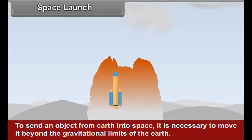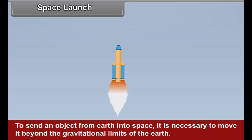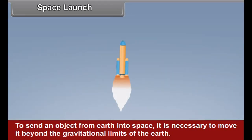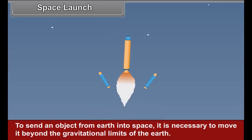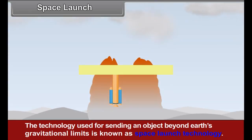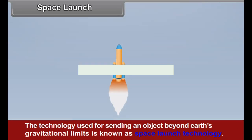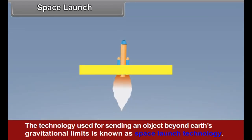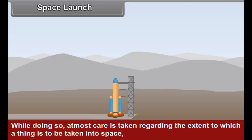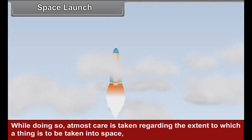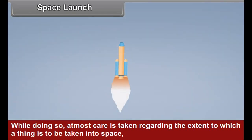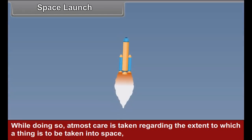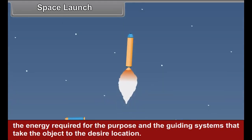Space Launch: To send an object from Earth into space, it is necessary to move it beyond the gravitational limits of the Earth. The technology used for this purpose is known as Space Launch Technology. Utmost care is taken regarding the extent to which a thing is to be taken into space, the energy required, and the guiding systems that take the object to the desired location.